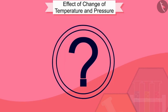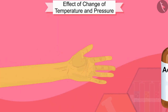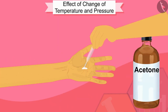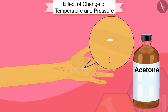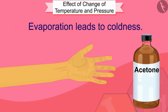Here is another interesting thing about evaporation. Have you ever poured a few drops of acetone on your palm? You must have felt cold on the palm — this is also caused by evaporation. Acetone particles receive energy from your palm and its surroundings and evaporate, because of which you feel coldness on the palm. In this way, we can see that evaporation leads to coldness.